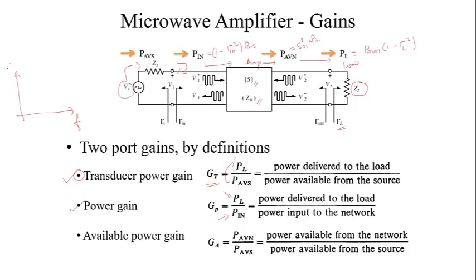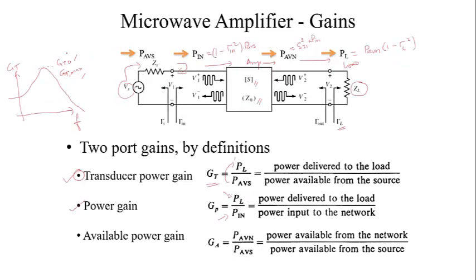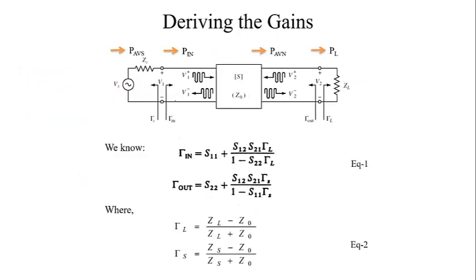We can see that there is a maximum possible value. This is called GT0. In some books, they will mention as GTmax. So in Pozar, he uses GT0. In some other books, you can find GTmax. Our expectation is we have to achieve this maximum gain as much as possible for a given transistor.